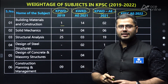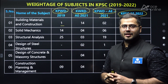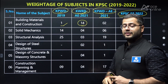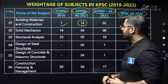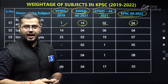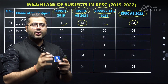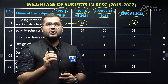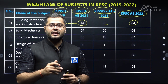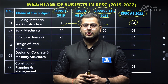First subject: building materials and construction. There is a large amount of variation here. In the KPWD 2019 examination, only one question was asked, but in KWRD AE, 14 questions were asked out of 100 — a huge difference. In KPWD 2021, only two questions were asked, and in KPSCA 2022, only four questions. Because of this huge variation and from my experience with Assistant Executive Engineer and Junior Engineer examinations, building materials and construction is a very important subject — you cannot leave it.